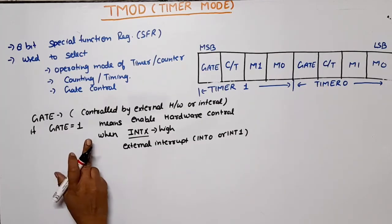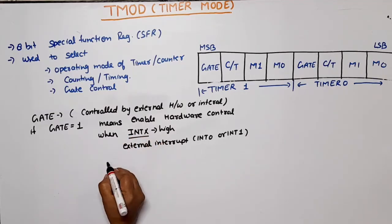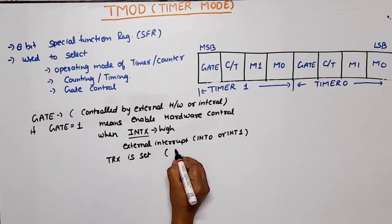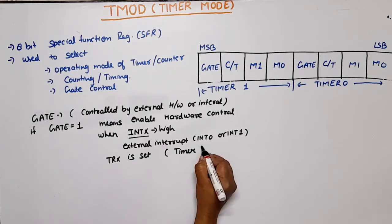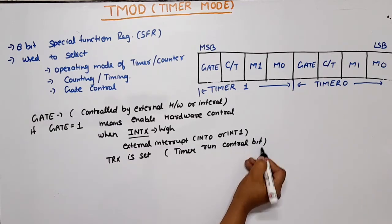GATE 1 means this is under the control of hardware when INT x is high and the second thing is TR x is set. What is TR? TR is the timer run control bit.